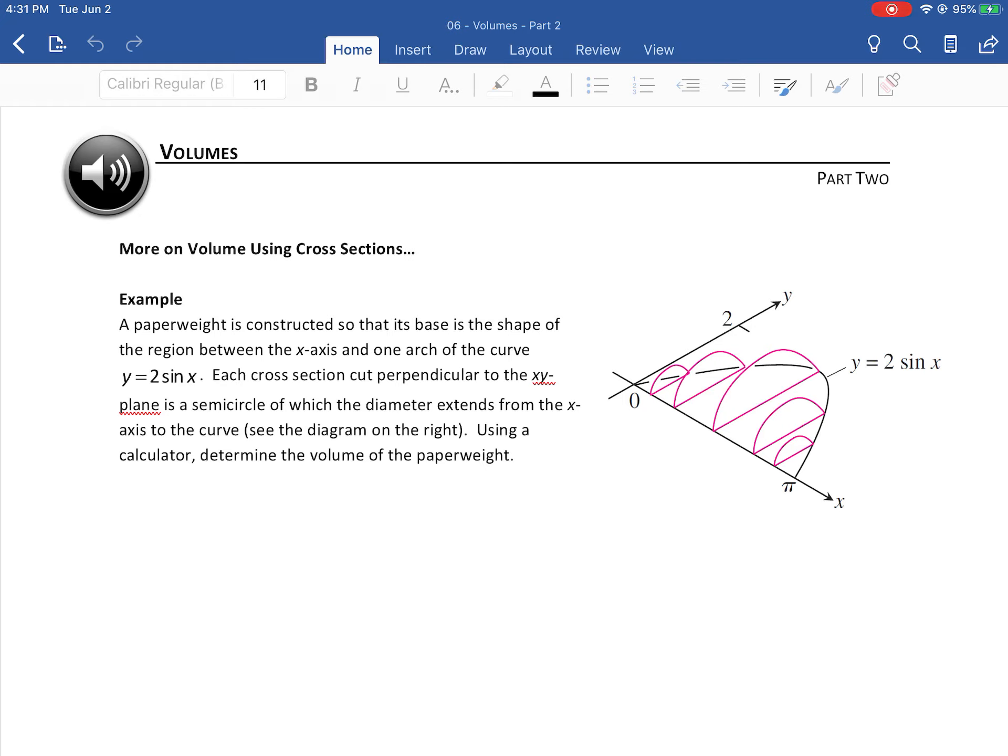So it's a semicircle whose diameter extends from the x-axis to the curve. Let me just draw that on there so you can see what we're talking about. There's a standard diameter of this thing right across there and that's on the flat plane of the bottom of this paperweight that's going to sit on the desk.